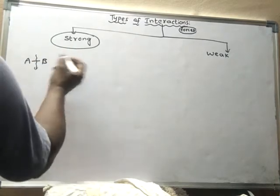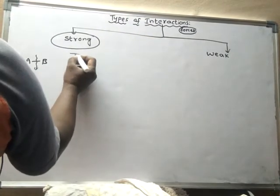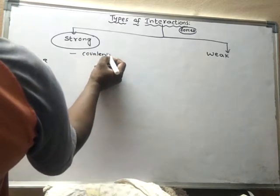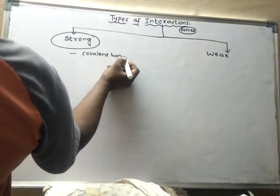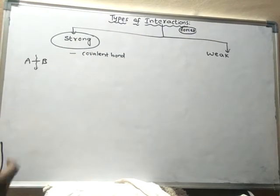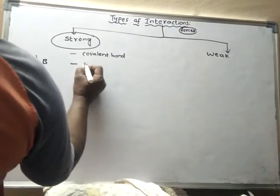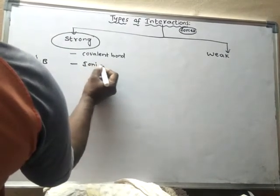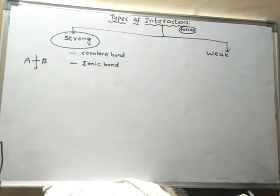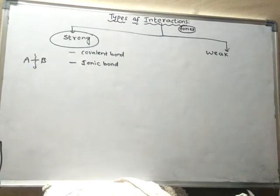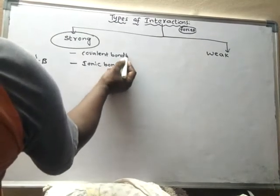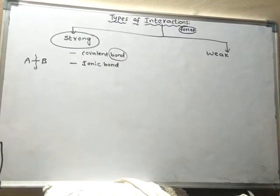Generally, these strong forces are of two types: covalent bonds and ionic bonds. In our chemistry, or in chemical language, bond means force of attraction.